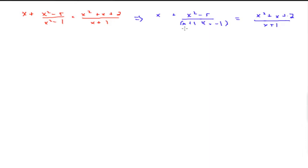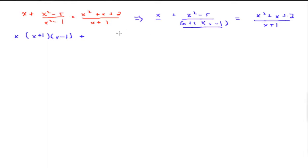So we know that the common denominator must be these two factors. For the x term, I'm going to multiply it by both factors, so it's going to be x multiplied by x plus 1 and x minus 1. I don't have to multiply the second term by anything because we already have the common denominator, so it's going to be x squared minus 5.